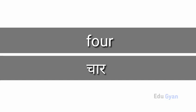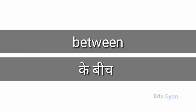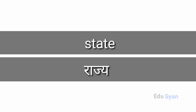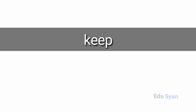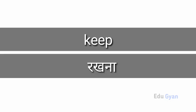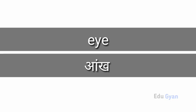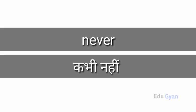Poor means char. State means rajya. Keep means rakhna. I means ark. Never means kbhi.